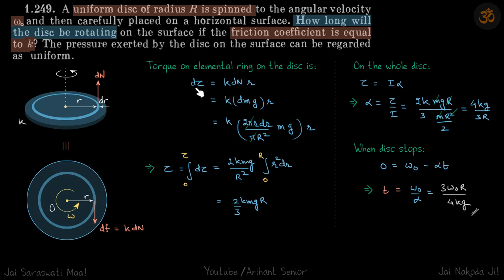Let's write our torque equation. d tau equals k dN into R, and dN will be due to the mass of the ring into g. So let's call it dM. The mass of the ring will be the area of the ring by total area of the disc times M.